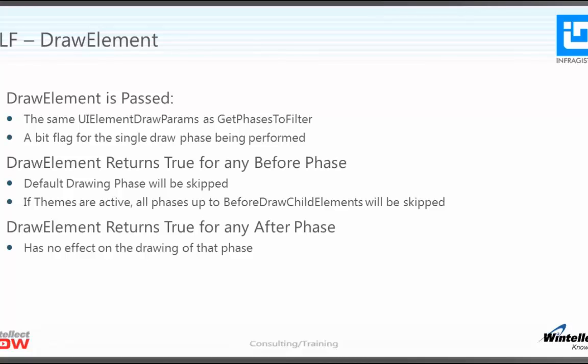If you return true for any before phase, you are basically saying you handled all the drawing for this phase, so bypass all the default drawing for the element. If themes are active, all phases up to the before draw child elements will be skipped. If you return true for any after phase, there will be no effect on the drawing of that phase because it has already been drawn.